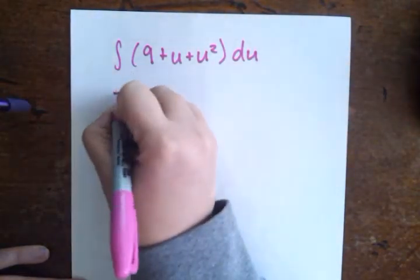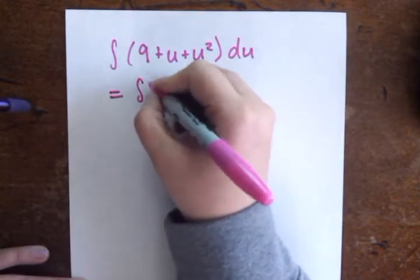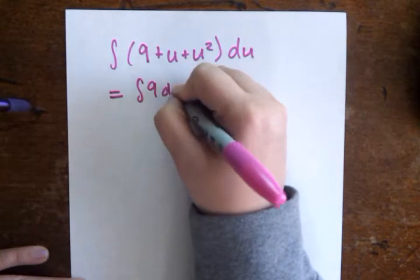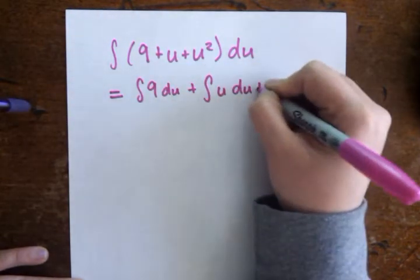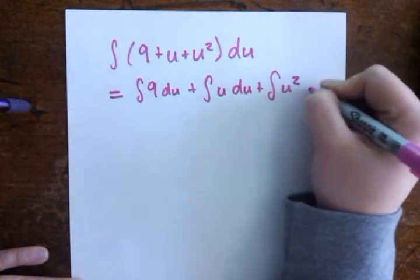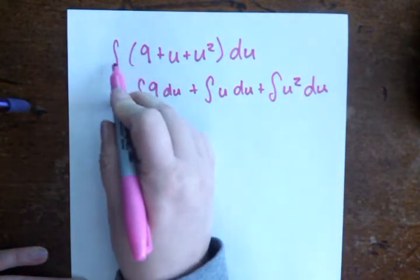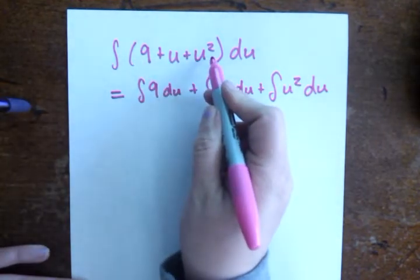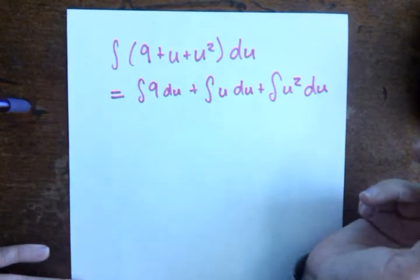Okay, so my rules for integration, I know that this integral is the same as the integral of 9 du plus the integral of u du plus the integral of u squared du. That's a rule that we have, that if you have the integral of a bunch of things that are added together, that's the same as just adding up the individual integral of each of them.